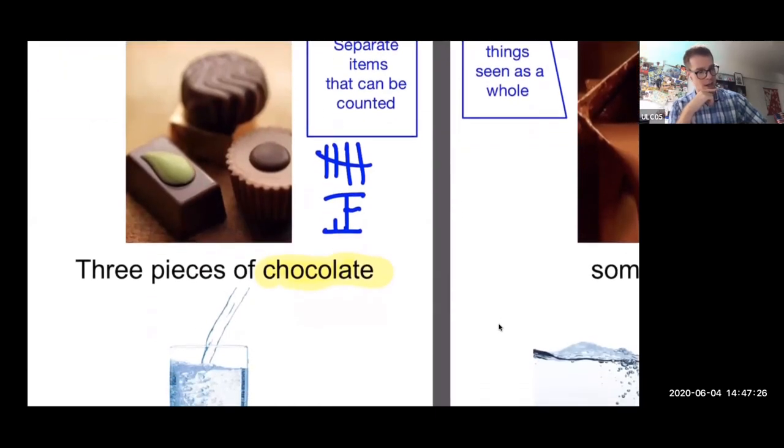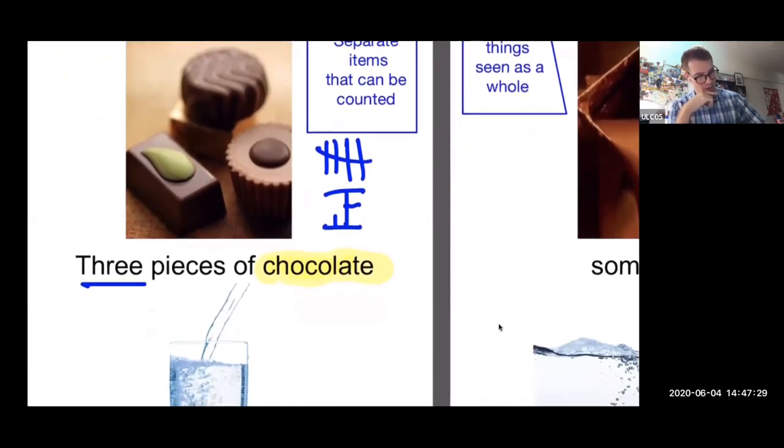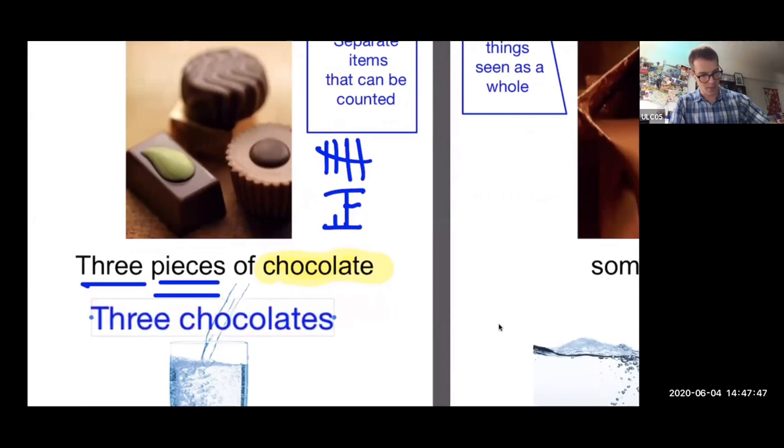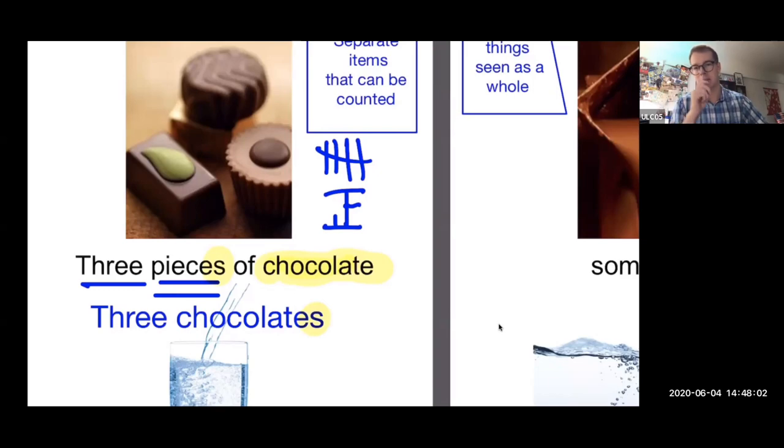So for this, I'll say three, if I want to count, and then I have this word 'pieces'. Three pieces of chocolate. Sometimes you'll also hear people say three chocolates - that's also okay. But what they mean when they say that is that there are three pieces of chocolate. And when we're counting, we often use this S to show the number. You know a lot of different countable words: three apples, three students.